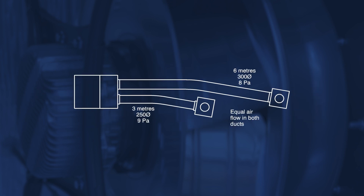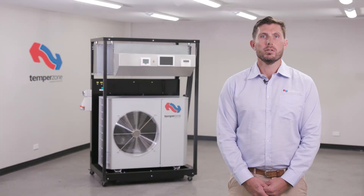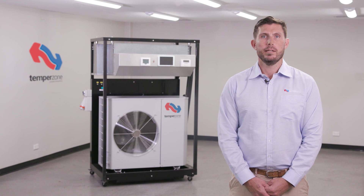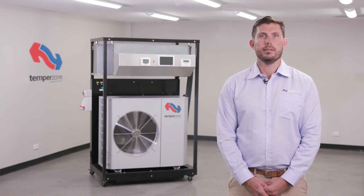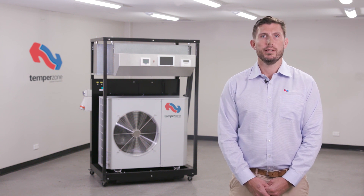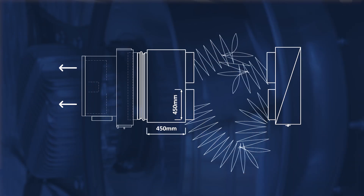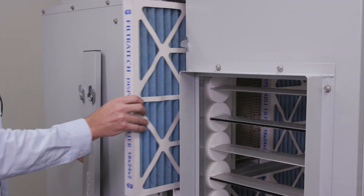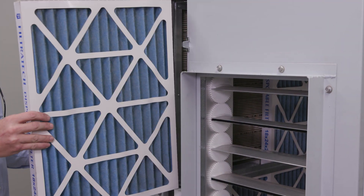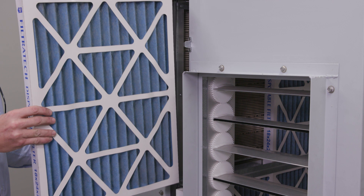Oversize the flexible duct for long runs. It is not recommended to install flexible duct longer than 6 meters. Should longer than 6 meters be required, it is suggested to incorporate some rigid straight circular duct. Do not coil up surplus flexible duct for short runs — cut to suit.